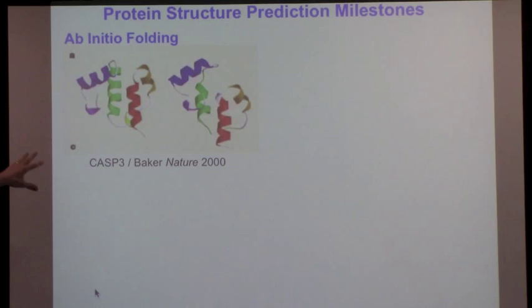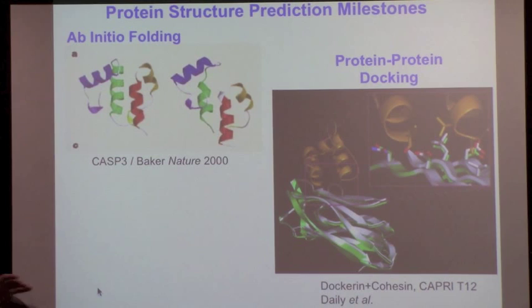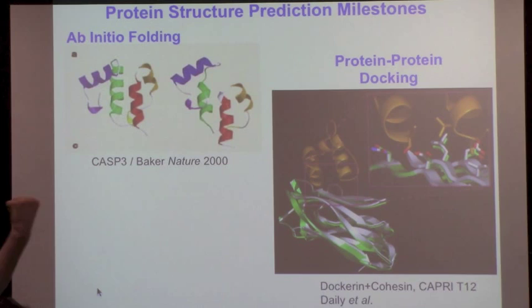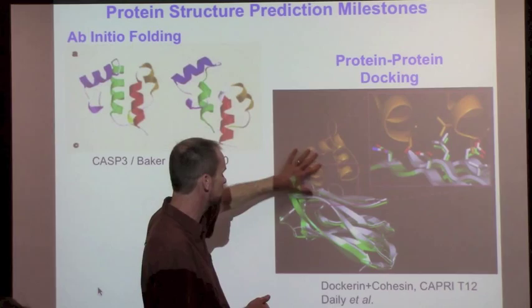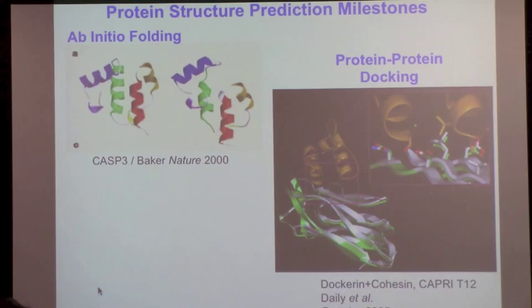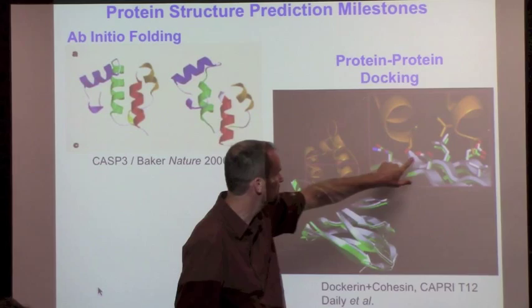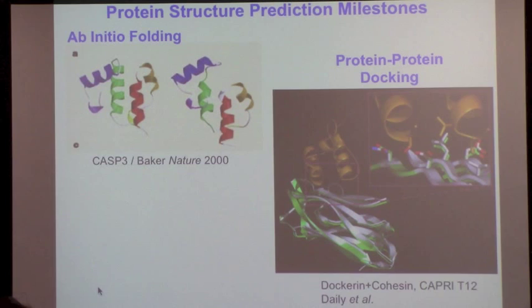It's not exactly right, but you can see the helices are in the right place. These are some of the very first blindly correctly predicted protein folds, around the year 2000. This is the beginning of the Rosetta program. This is protein-protein docking. This is work I did when I first came to Hopkins - another blind challenge where we're given two proteins and we have to dock them together.